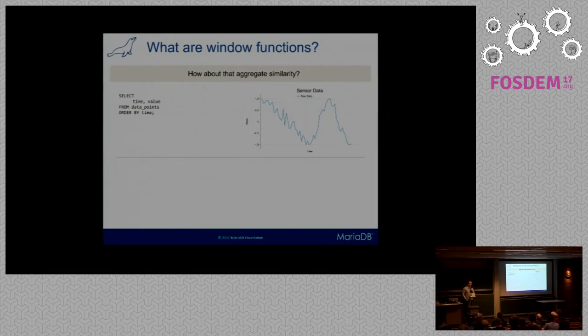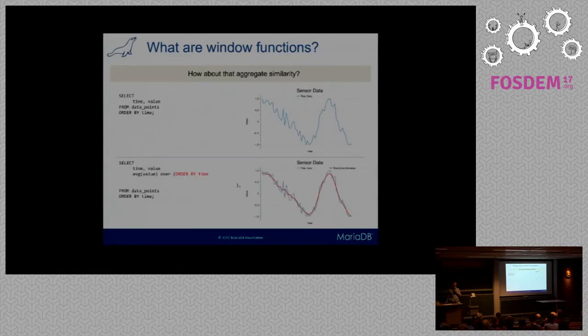I also mentioned that window functions behave like aggregate functions and that they are computed over a set of rows. Say we have some sort of sensor that picks up data from time to time. We have the timestamp and the value that the sensor recorded. If we order it by time and plot it, we might get some sort of graph. We don't like the data because it's noisy and we would like to smooth it out. We can do this by averaging across a set of values.